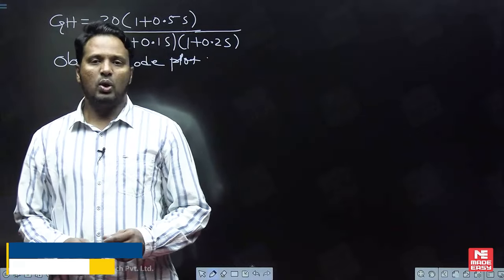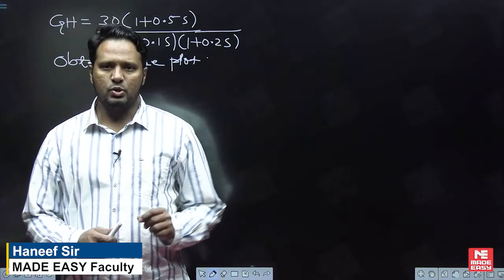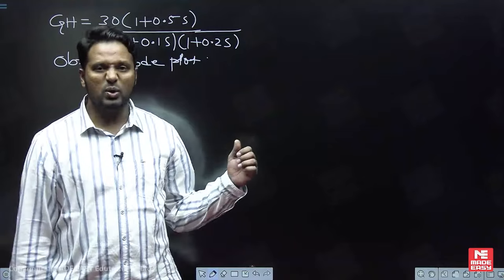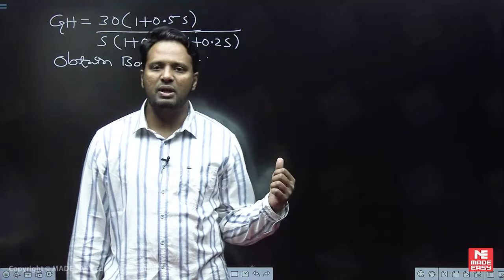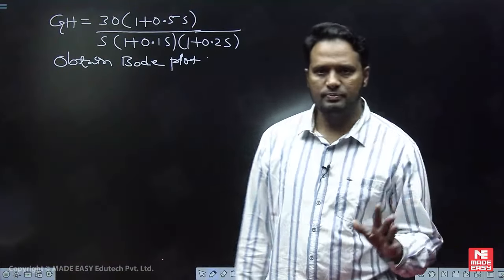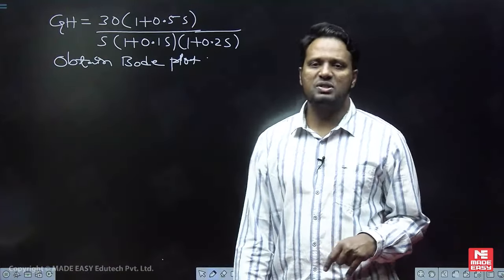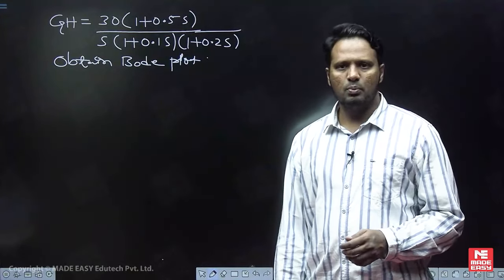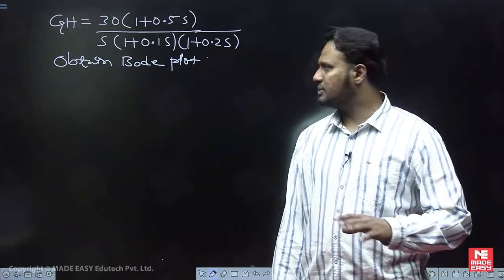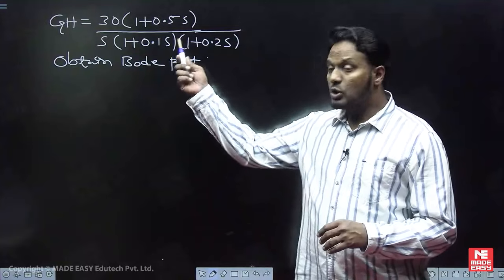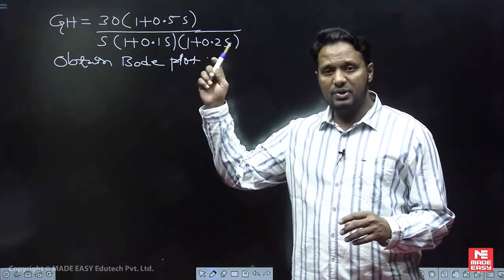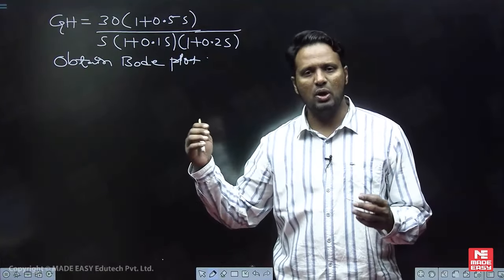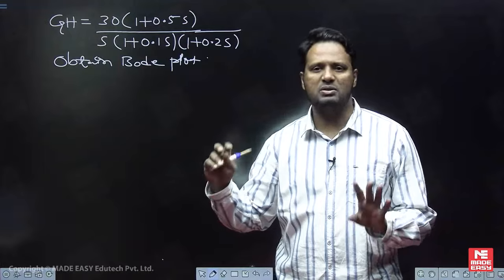What is the first step to obtain the Bode plot of any system? As I told you, it is the time constant form of the transfer function. You need to verify if it is already in time constant form — if so, well and good. Otherwise, you have to convert it to time constant form.